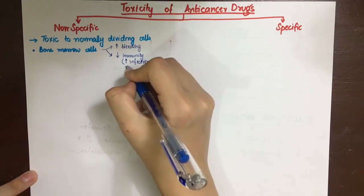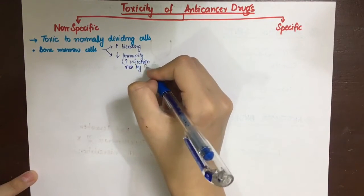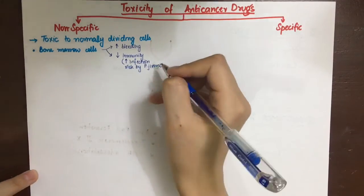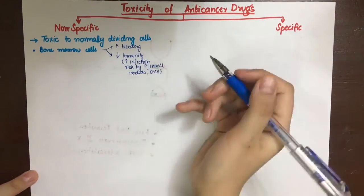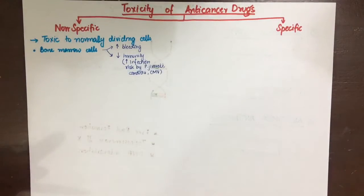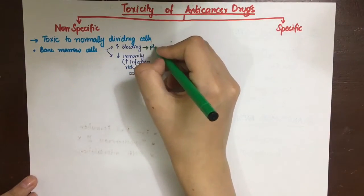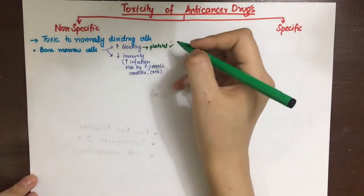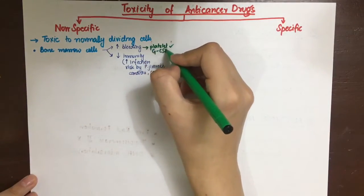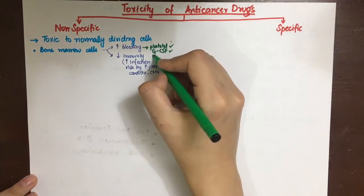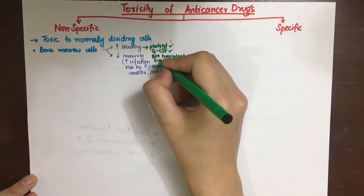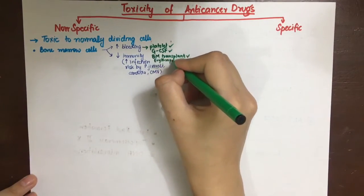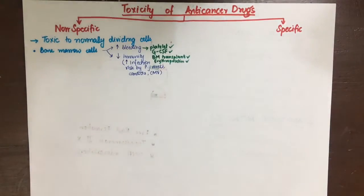Decreased immunity leads to increased risk of infections by fungi, bacteria, viruses, and parasites. Leukopenia, agranulocytosis, bleeding, and anemia can be managed by administering platelet transfusion, granulocyte colony stimulating factor, erythropoietin, and bone marrow transplant.